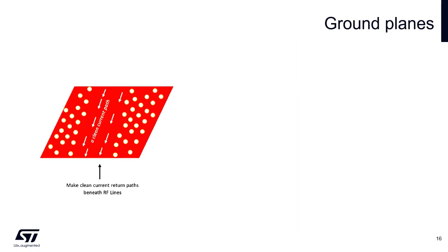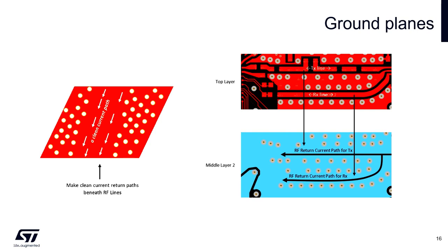Solid, uninterrupted ground plane below transmission lines is very important. It is the area where the return current flows. If the return current flows directly to the transmission line, then the current loop is minimized. Here we can see examples of our evaluation boards. The solid ground plane is recommended under the whole RF section. Ground planes on different layers must be stitched together by vias.